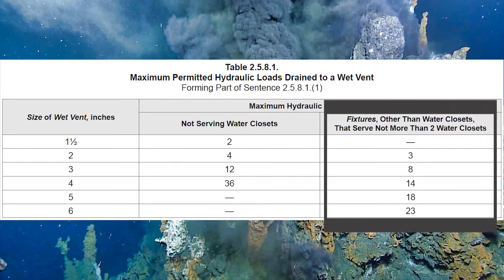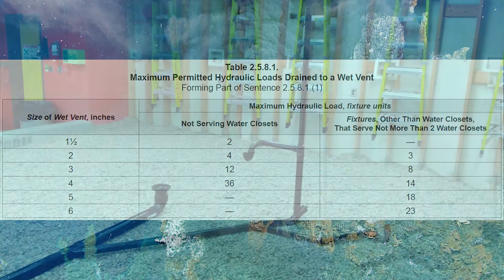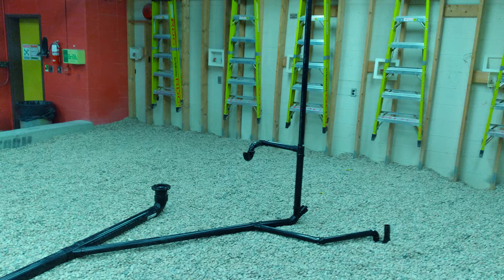Moving one column to the right, it says 'fixtures other than water closets that serve not more than two water closets.' This is the hydraulic load in fixture units for wet vented systems that do serve water closets. The best way to learn how to use this table is to actually go and size up a system.